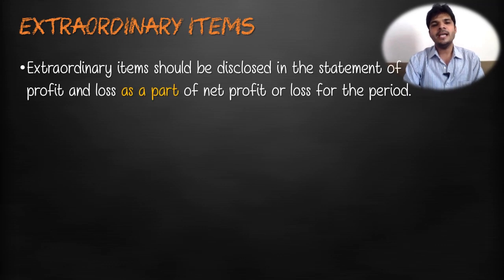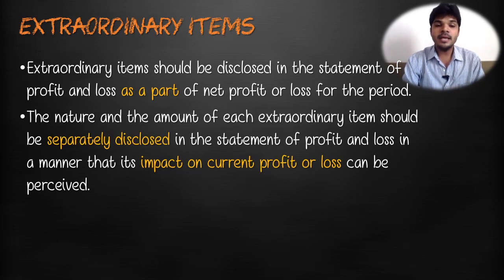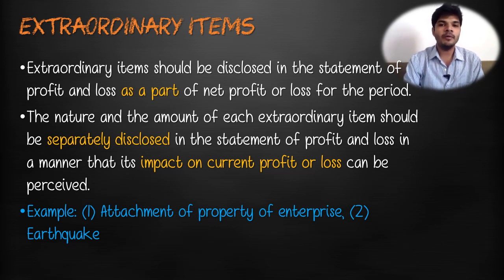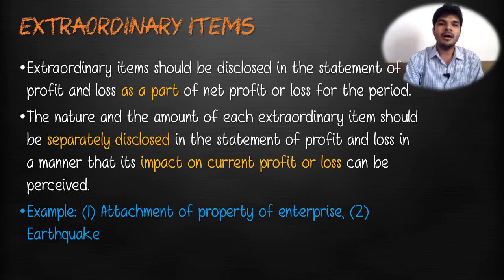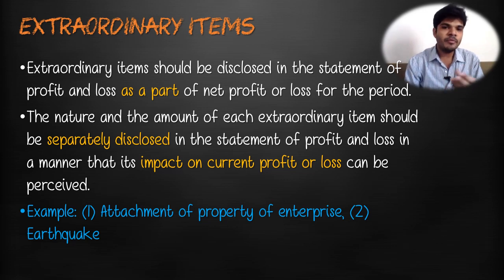Extraordinary items should be disclosed in the statement of profit and loss as part of net profit or loss for the period. The nature and amount of each extraordinary item should be separately disclosed in the statement of profit and loss in a manner that its impact on current profit and loss can be perceived. Examples include attachment of a property by the income tax department and losses from natural calamities such as an earthquake. Generally, in the profit and loss account, we first arrive at the normal profit from ordinary items and then include or exclude extraordinary items to get the profit after their effect.